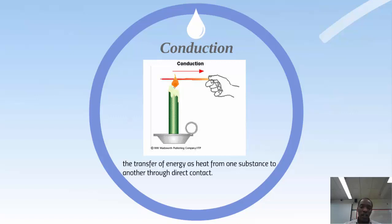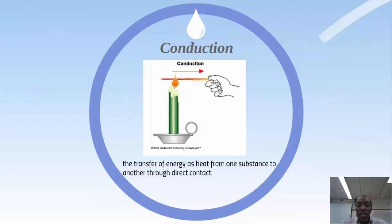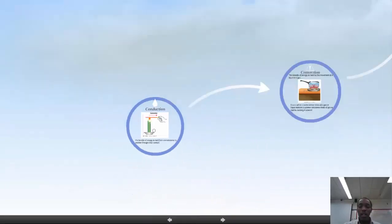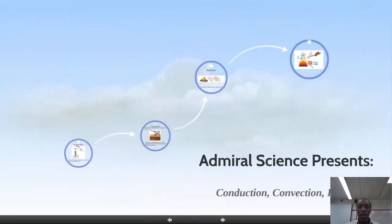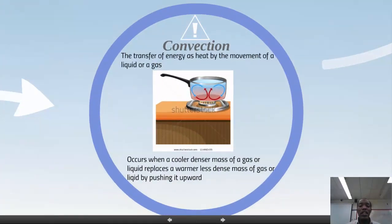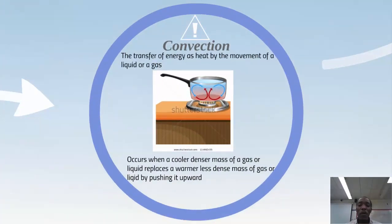That contact allows the heat to transfer from the flame, down the rod, and into the person's hand — eventually it's going to burn their hand. So that's conduction: heat transfer through direct contact.